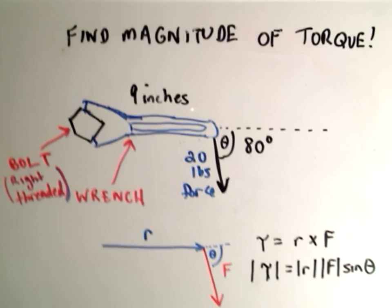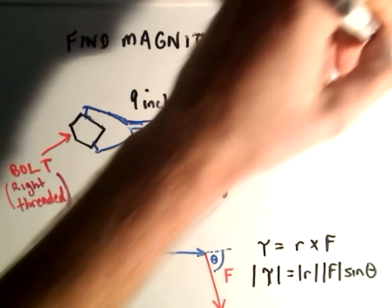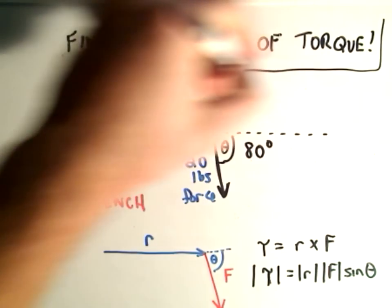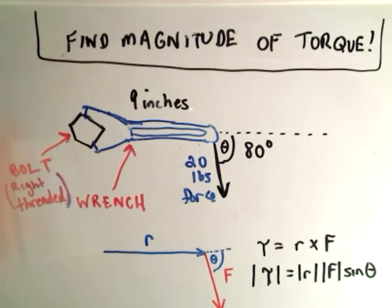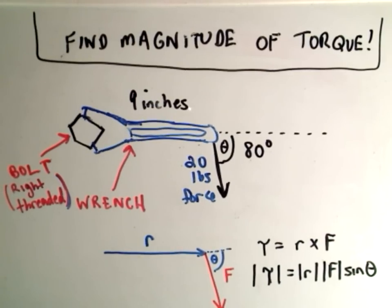So let me describe what's going on here. What we're going to do is find the magnitude of what's called the torque vector. If you listen to truck commercials, at least here in the United States, they always talk about the torque of the truck — it's got a big torque.